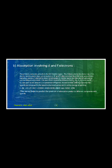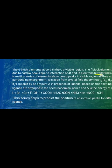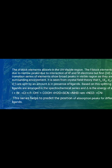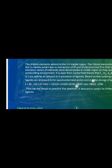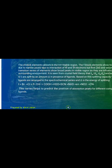It is seen from crystal field theory that the d orbitals — specifically t2g orbitals (dxy, dyz, dzx) and eg orbitals (dx²-y², dz²) — are split by an amount delta in the presence of ligands. Based on this splitting capacity, the ligands are arranged in the spectrochemical series, where delta is the energy of splitting.